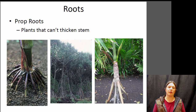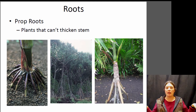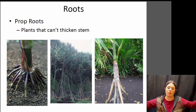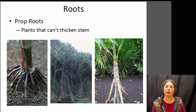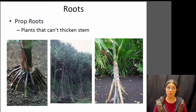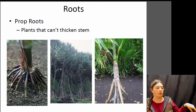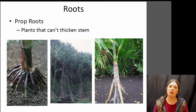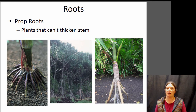Some roots have very particular functions. Some are used for support — these are called prop roots — for plants that can't make their stems much thicker to support themselves. For example, a corn plant has prop roots that grow out from the edges of the stem like tripods, helping stabilize the plant and keep it from tipping over. The walking palm is a type of palm tree that can actually move very slowly — it grows out a prop root in one direction, shifts its weight toward that root, then grows another prop root, gradually moving a few feet over years toward better light.